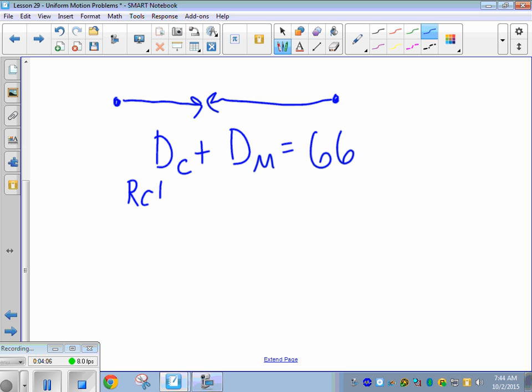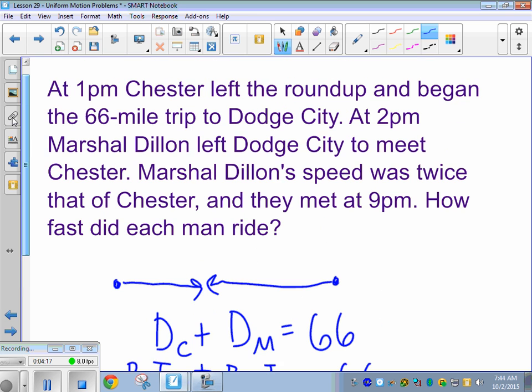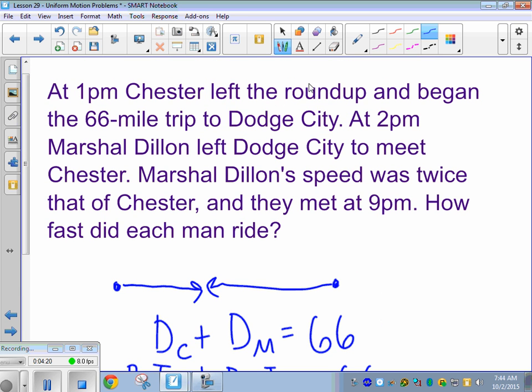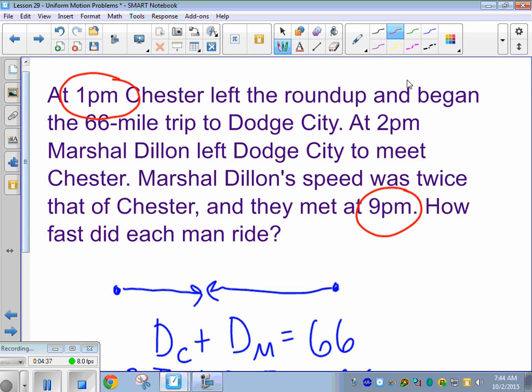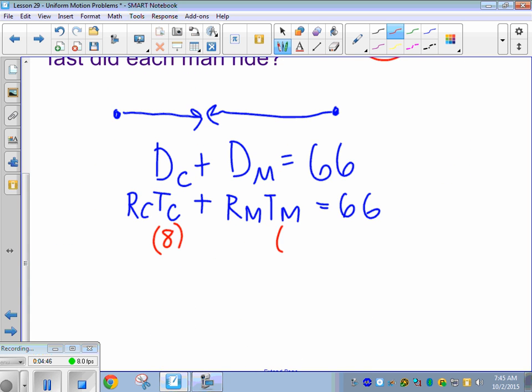All right. Distance Chester plus Distance Marshall is equal to 66. So rate Chester, time Chester, rate Marshall, time Marshall, equals 66. Okay. So now it says, at 1 p.m., Chester left the Roundup, and at 2 p.m., the other guy left. So Chester's was 1 p.m., and they met at 9 p.m. So Chester traveled for how many hours, you guys? Eight. So I'm going to plug in an eight for time Chester. All right. The other guy left at 2 p.m., and they met at 9 p.m. So Marshall Dillon, how many hours was that? Seven. So I'm going to plug seven in for my time here.